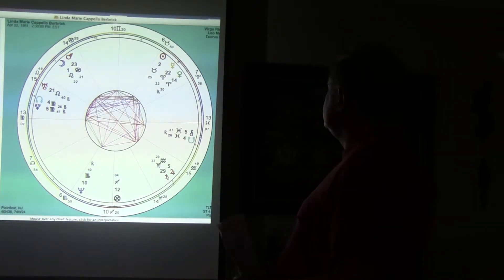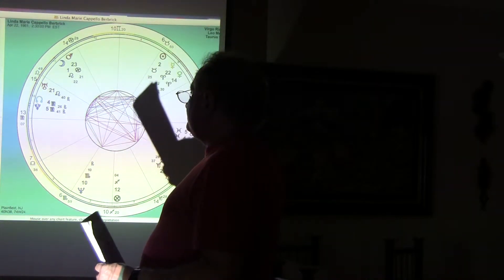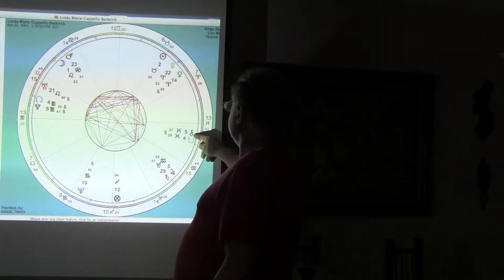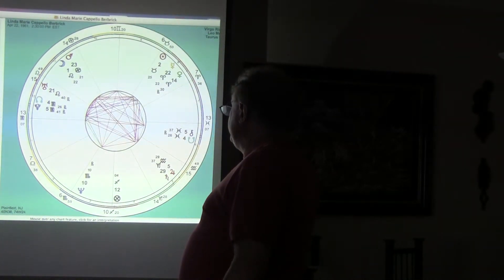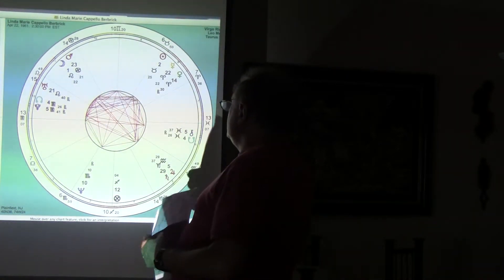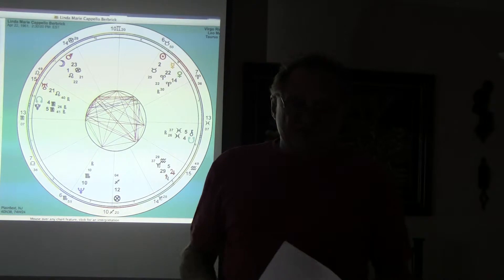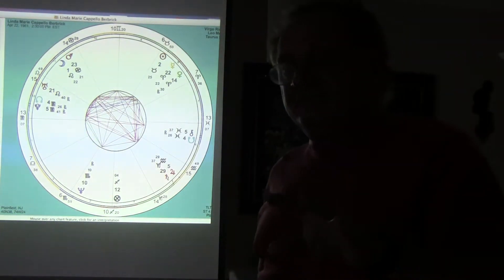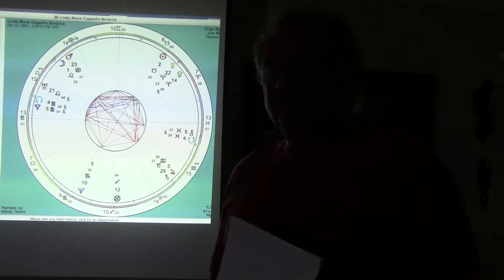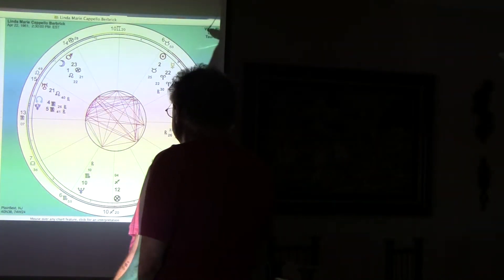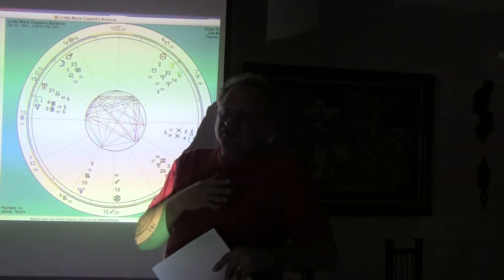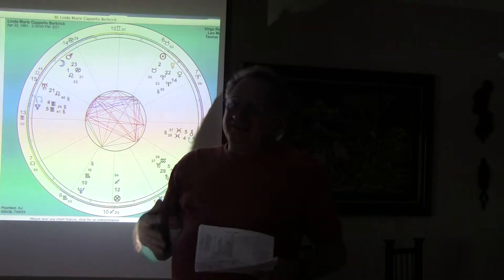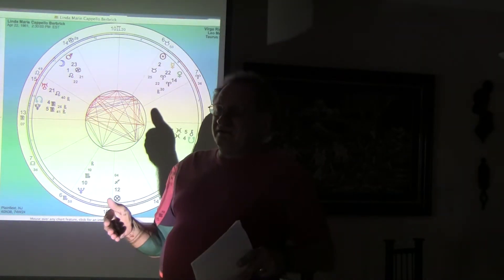Chiron is sitting right here at five Pisces opposing Pluto — would you interpret that as something to do with her healing process? I don't use Chiron, but I can't say don't use it especially since she works on healing herself. I teach what works for me and what I've learned — I can't teach something I'm not convinced about. Everyone should find their own way.